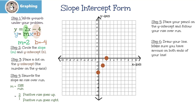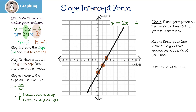Our next step, step 6, is to draw our line. Now I try to draw my line as best I can, but you're going to have a ruler, so yours is going to be perfect. The last step, step 7, is always to label the line — that means we're going to write what this line is. So the name of this line is y equals 2x minus 4. And guess what? That's it! We're done!